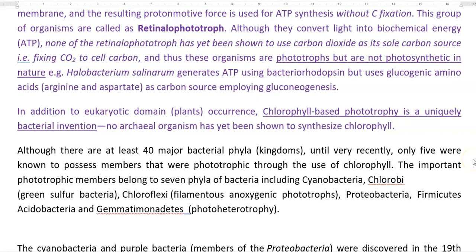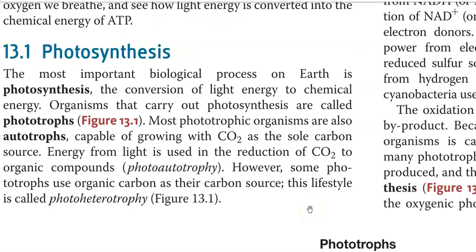The important phototrophic members belong to 7 phyla: cyanobacteria, Chlorobi (which refers to the green sulfur group of bacteria), Chloroflexi (which refers to the filamentous anoxygenic phototrophic group of bacteria), certain proteobacteria, Firmicutes, Acidobacteria, and even Gemmatimonadetes members were phototrophic in nature.